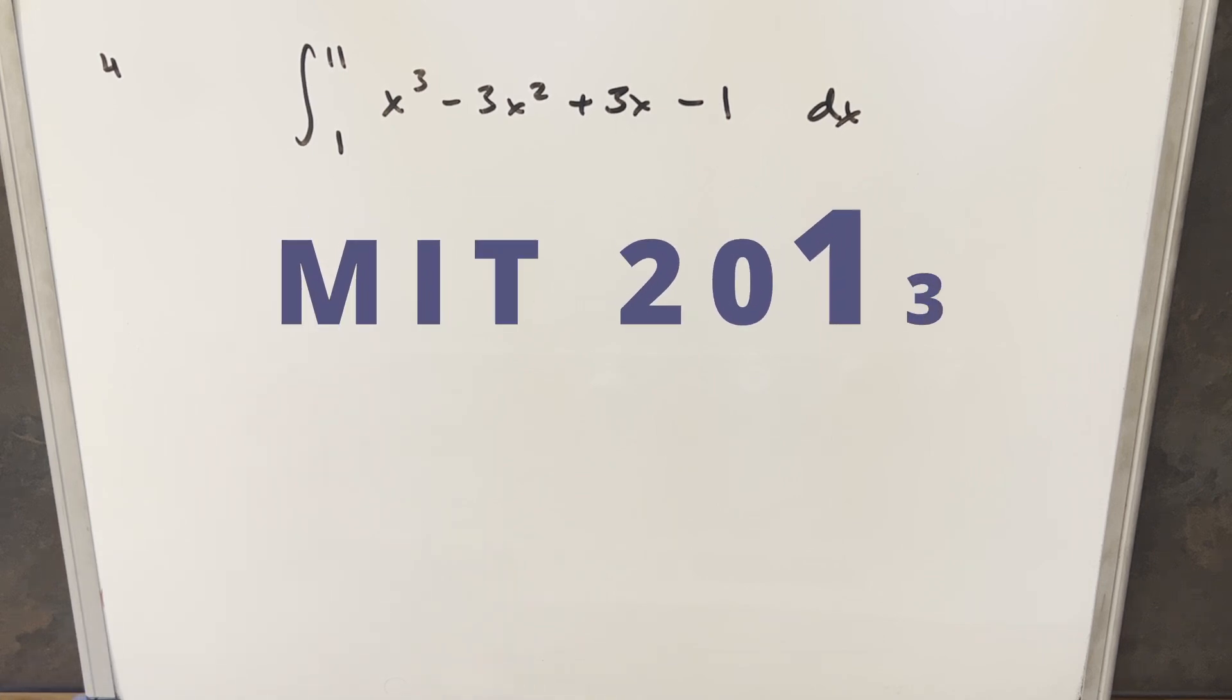Okay, we have here today a really quick and easy integral. This one's from MIT 2013 problem 4. We have the integral from 1 to 11 of x cubed minus 3x squared plus 3x minus 1 dx.